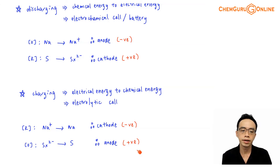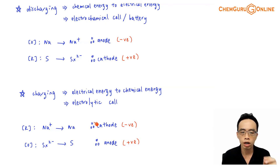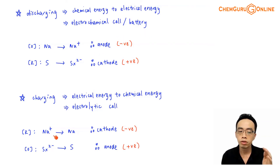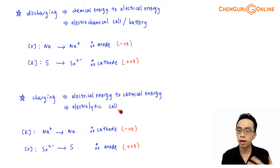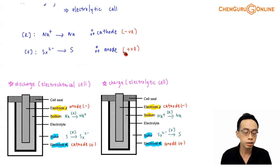An easy way to remember that the cathode in an electrolytic cell is negatively charged: the cathode is supposed to attract cations like Na+, so it must be negatively charged. The anode for an electrolytic cell is positively charged because it needs to attract anions, which are negative. Interestingly, at the sodium side: during discharging it is the anode (negatively charged), and during charging it becomes the cathode — but it is still negatively charged. At the sulfur side: during discharging it is the cathode (positively charged), and during charging it becomes the anode — but it is still positively charged.